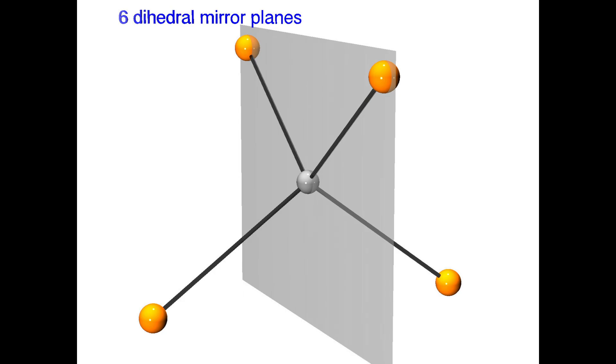They bisect two of the ligand atoms reflecting them into themselves, and they relate the other two ligand atoms to one another by reflection.